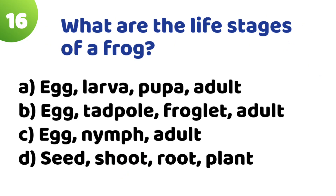Question 16: What are the life stages of a frog? Option A: Egg, larva, pupa, adult. Option B: Egg, tadpole, froglet, adult. Option C: Egg, nymph, adult. Option D: Seed, shoot, root, plant. The correct answer is Option B — Egg, tadpole, froglet, adult.